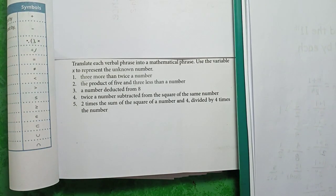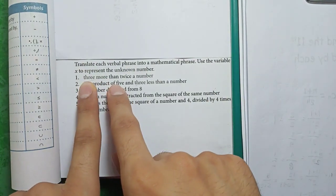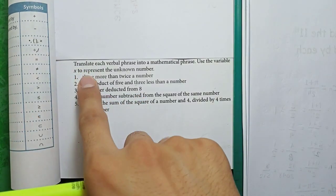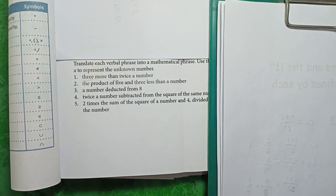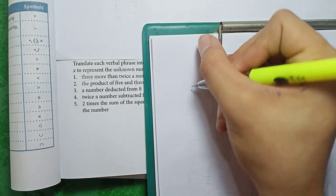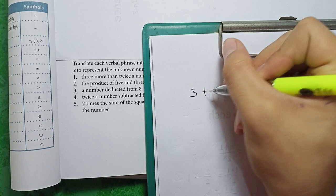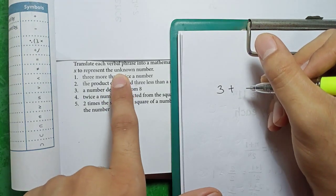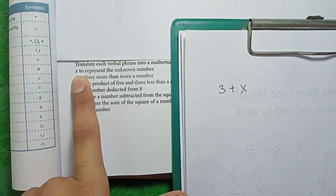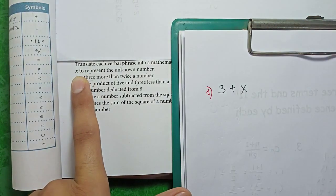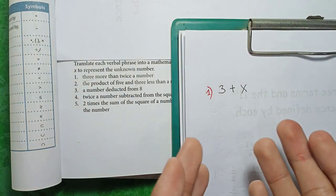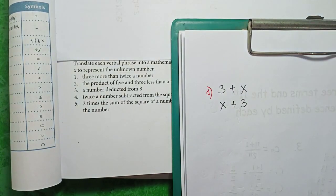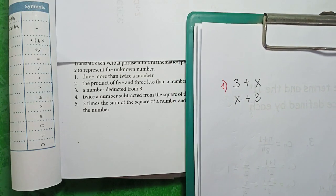So how to answer this first number, number 1, we have 3 more than twice a number. So 3 more than simply means addition, and we need to add 3 and twice a number. I'm just going to write 3, and more than means addition, plus unknown number. So the unknown number must be represented in a variable x. So 3 plus x. Answer for number 1 is 3 plus x. And since this is addition, we can interchange them. Let's put x on the leading term, x plus 3. Either way, that can be the answer.